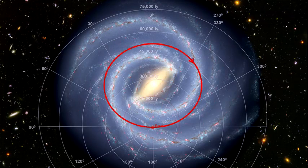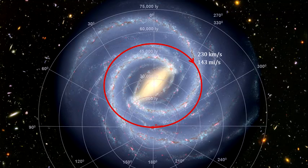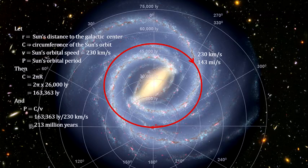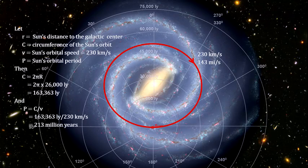Here we see the sun's orbit around the galactic center. Our orbital speed is approximately 230 kilometers per second, or 143 miles per second. That's fast, but it takes us around 213 million years to complete one orbit around the galactic center. The last time we were in the same place in our orbit, dinosaurs were just starting to appear on the Earth, and we have traveled around one ten-thousandths of a revolution since the origin of humans.